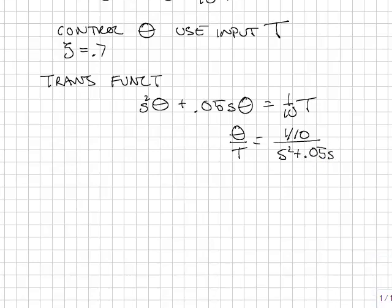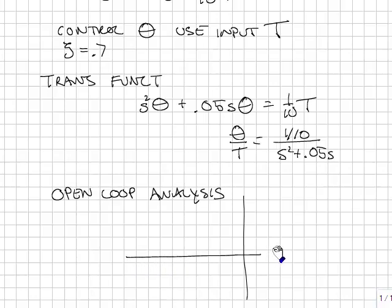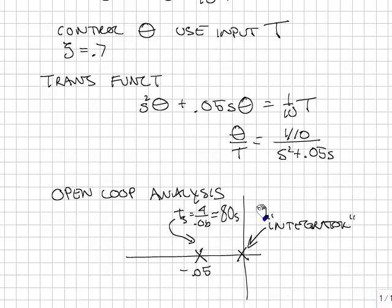The first step in any control system design is to look at the open loop plant. Our system has poles on the complex plane, one at zero and one at minus 0.05. So we have one pole here, which is an integrator, and one here that dies out with a settling time of 4 over 0.05 for around 80 seconds. So very slow-moving system.